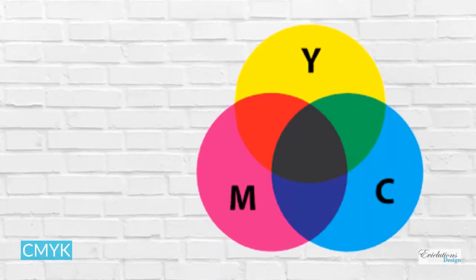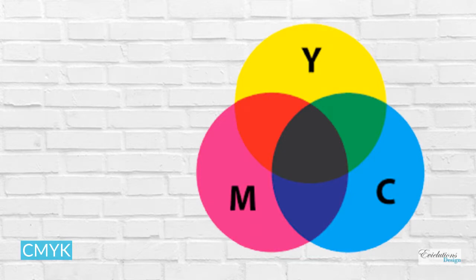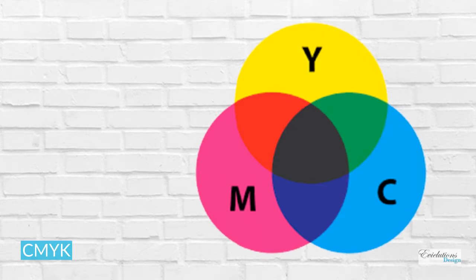CMYK stands for cyan, magenta, yellow, and black. Essentially, all the colors are combined by a printing machine to create varying shades. All colors start as blank white and as layers of ink are added, the brightness decreases to the color you want. Mix all the colors together and you end up with pure black.